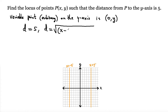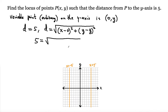The distance formula gives us: the square root of (x minus 0) squared plus (y minus y) squared, where y is the arbitrary Y-coordinate on the Y-axis. So this simplifies to the square root of x squared, since y minus y equals 0. Therefore, 5 equals the square root of x squared.